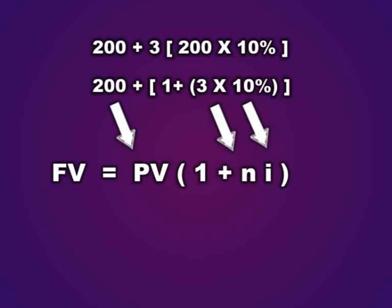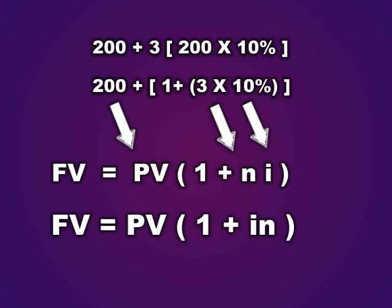Written differently, that is present value times (1 plus n times i), where 1 is 1, n is the number of years, and i is our interest rate. So the formula is: Future Value equals Present Value times (1 plus interest times number of years).